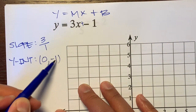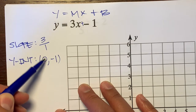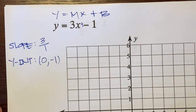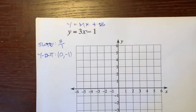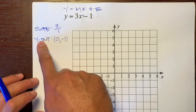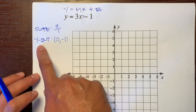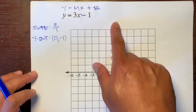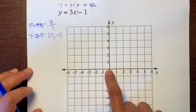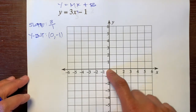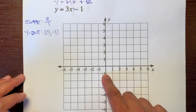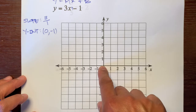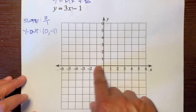Our Y-intercept — where the line intercepts the Y-axis — is negative 1, written as the coordinate pair (0, negative 1). That negative 1 goes in the Y-coordinate, and the X-coordinate for our Y-intercept is always 0, because we're not moving left or right on the Y-axis, only up and down.